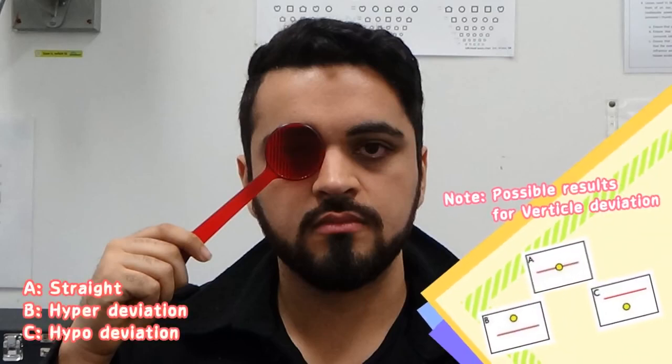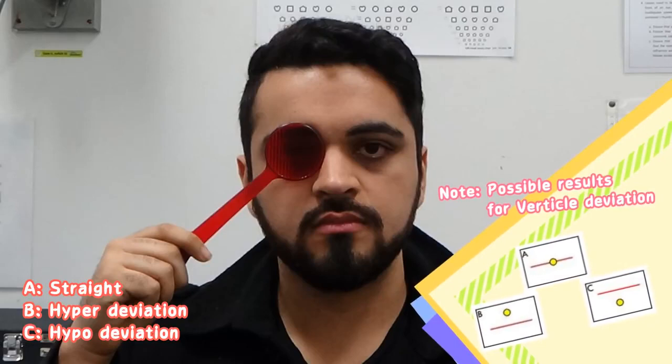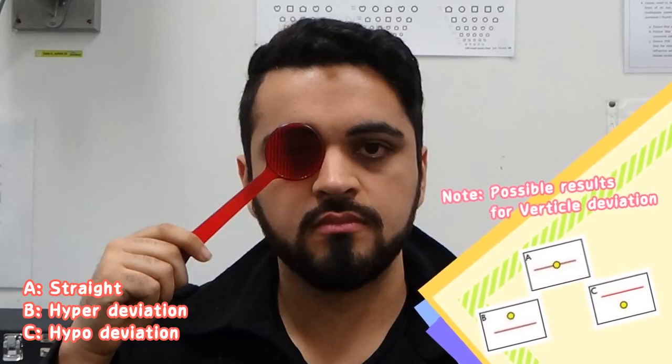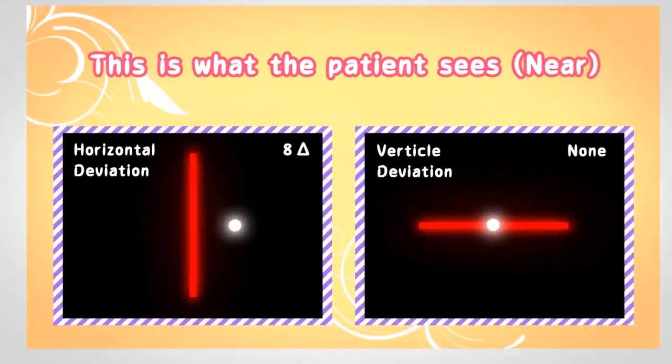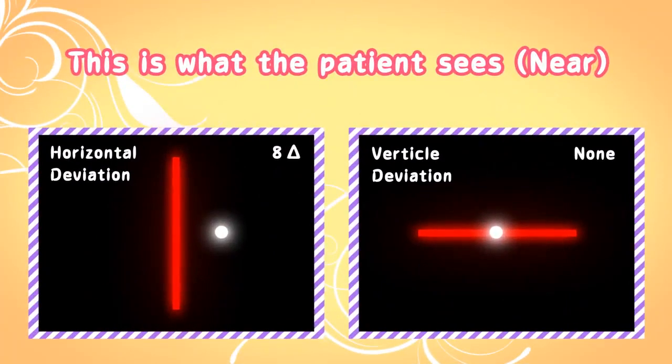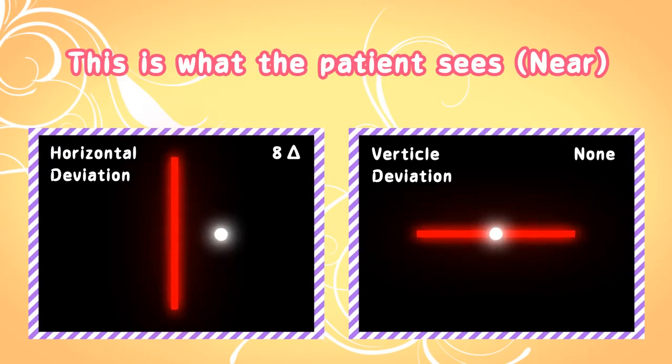To measure the vertical deviation at near, the patient is asked to hold the Maddox Rod in front of the right eye with the cylinders vertical, so the red line will now be horizontal. The patient is asked whether the white light is superimposed on the red line or if it is above or below the red line. In this case, the patient has indicated that the white light is superimposed on the red line, meaning that they have no vertical deviation.